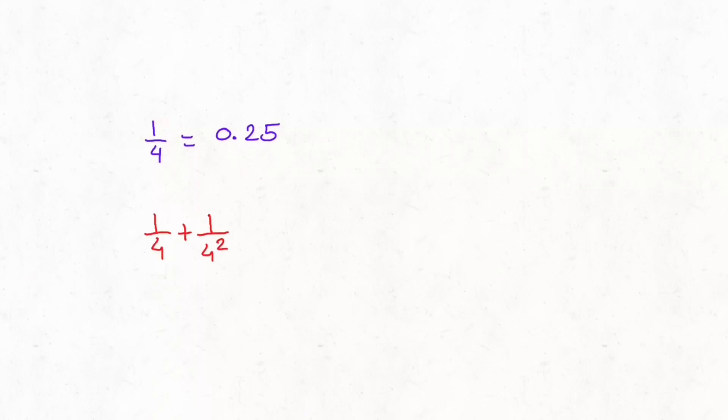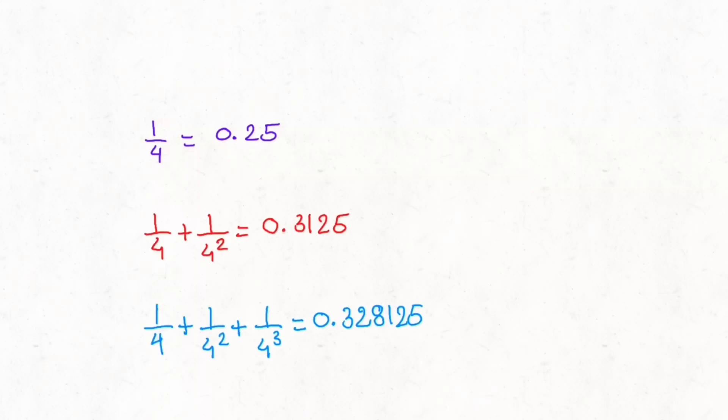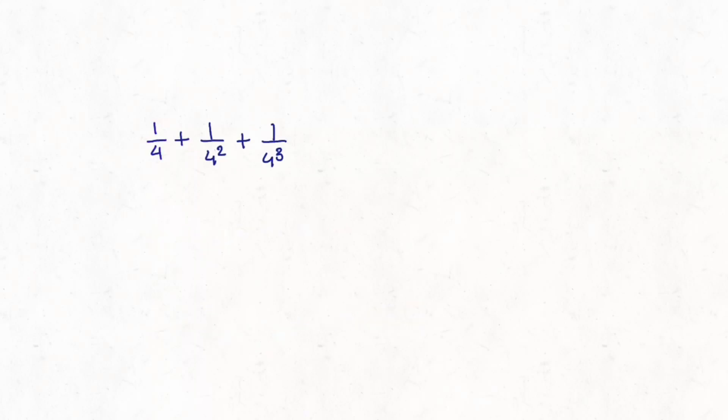Even some series converge to a limit. The more terms you add together, the closer it will be to its limit. For example, adding more reciprocal powers of four gets us closer to one third, and adding all of them gets us to one third.